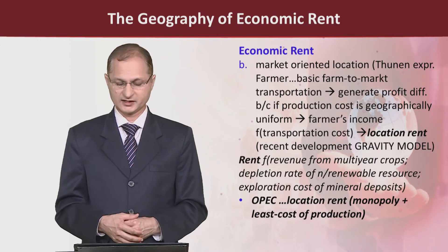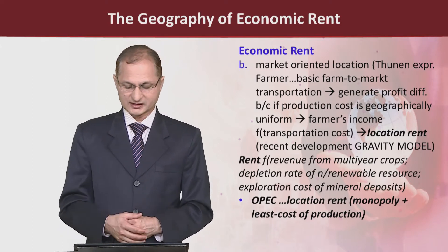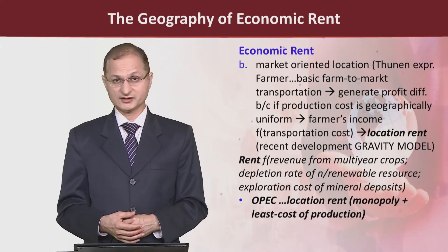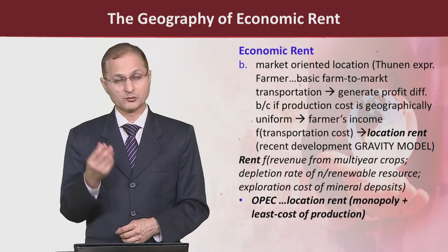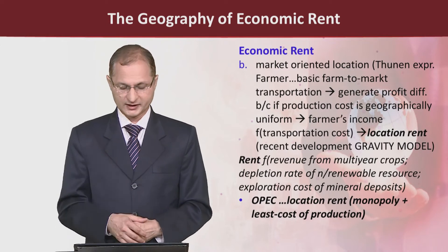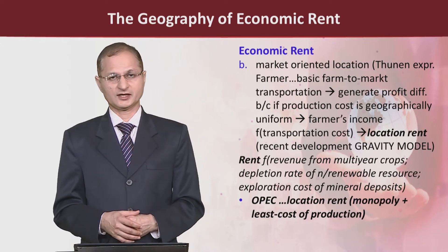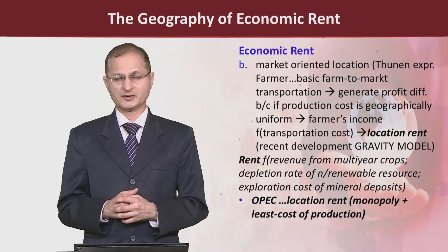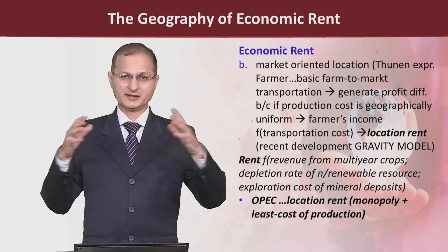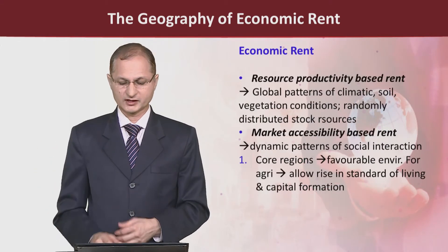These are basically the elements that play an important role in generating economic rent. For example, location rent is generated where one component is monopoly and the other is the least cost of production — the cost of production is minimum due to bulk production, which gives economies of scale.